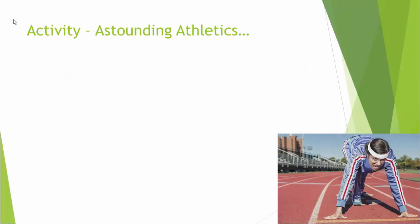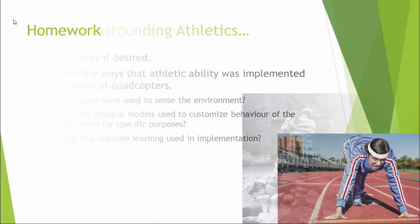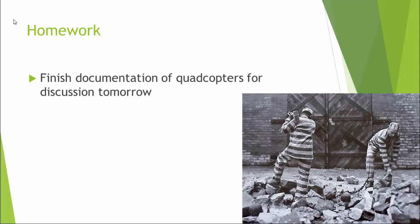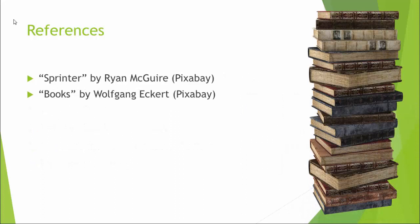For your activity, please view the TED Talk on the Astounding Athletics of Quadcopters. Work in pairs if desired, and consider the ways that athletic ability was implemented with control of quadcopters. What inputs were used to sense the environment? How many physical models were used to customize the behavior of quadcopters for specific purposes? And how was machine learning used? For your homework, please finish your documentation and bring your notes for the discussion tomorrow. Be sure to sign up for Google Classroom with the code you've been given, fill out your contact information, and get your consent form signed to return to me tomorrow wherever possible. Thanks very much, and have a great night.